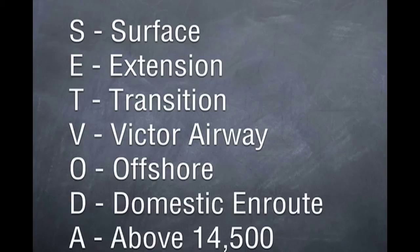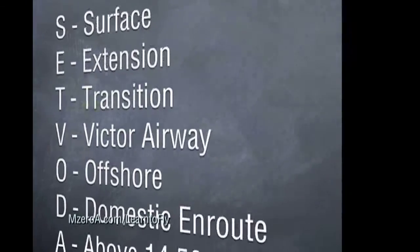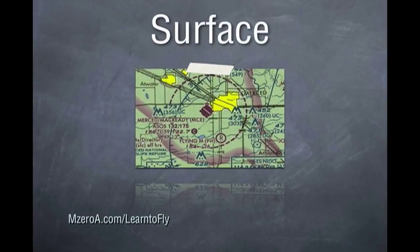Let's take a look at all these and apply them. First up is surface Class Echo airspace. Notice it looks just like a Class Delta airport, however, it is magenta.